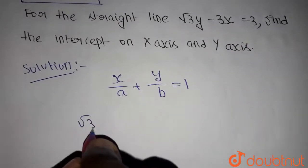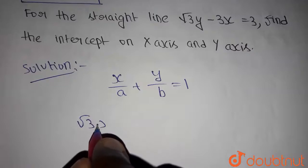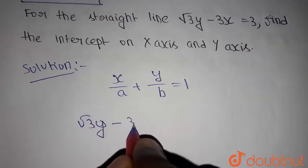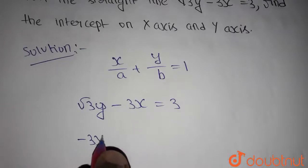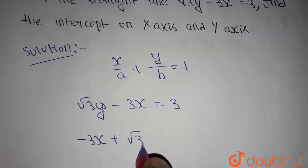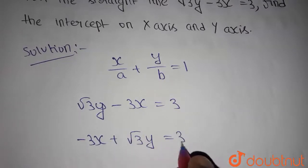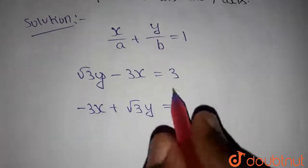The given line is root 3y minus 3x equals 3. We can write this as minus 3x plus root 3y equals 3. Now divide both sides with 3.